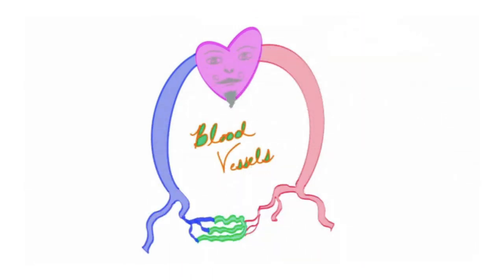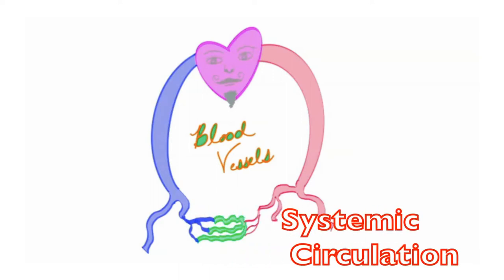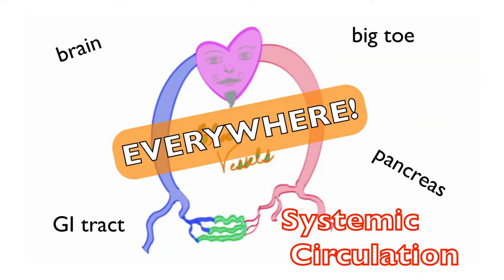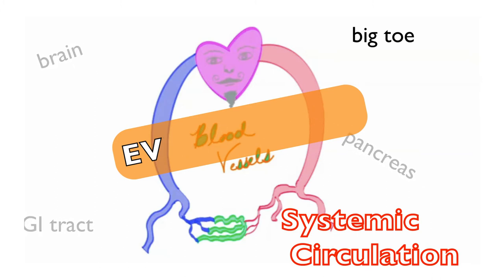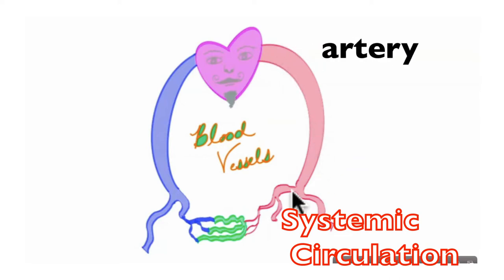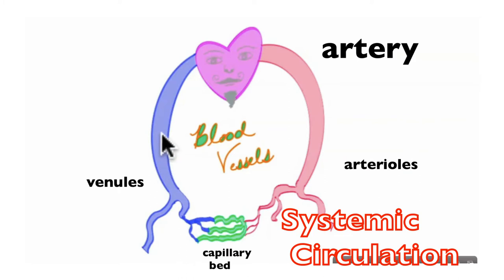Let's take a basic look at the cardiovascular system, specifically the systemic circulation. Systemic suggests body-wide — blood goes everywhere: up to the brain, to the pancreas, the GI tract, the big toe, perfusing nutrients, gases, and hormones throughout the whole body. Leaving the heart in the systemic circulation is an artery, giving rise to arterioles, then to a capillary bed, then venules and veins back to the heart. The pump for the systemic circulation is the left ventricle.